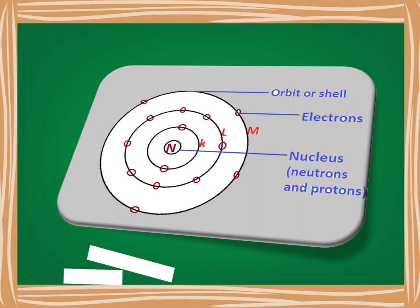In this picture, you can see the nucleus in the center, denoted by N. Surrounding the nucleus, you can find black circles — these are the orbits or shells. In the orbits, you find electrons. Inside the nucleus, you will find neutrons and protons. There is a force of attraction between the positive nucleus and the negative electrons. These electrons are bound to the nucleus with energy known as binding energy.